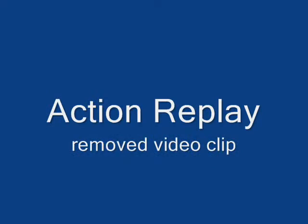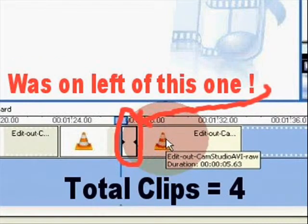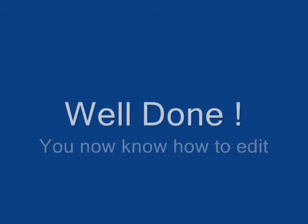Let's have a look at it again — action replay. This is before, so you can see the total number of clips equals five. This is the clip to be removed before hitting the delete key. Once the delete key is hit, you can see that the total clips equals four, which confirms it's been removed. Well done — now you know how to edit and remove a clip.